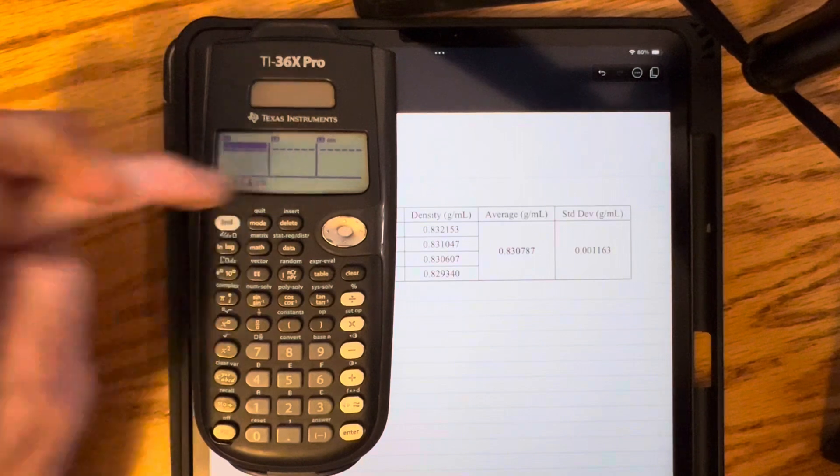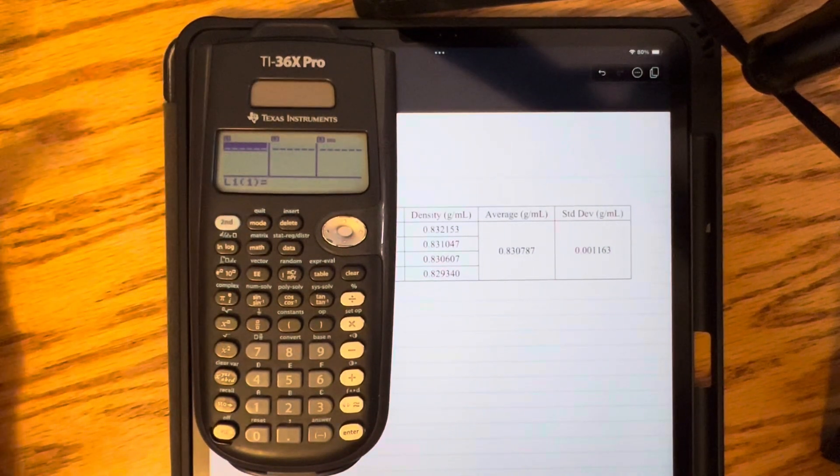This gives us a miniature spreadsheet. If there are values in here, you want to delete them all before you enter your data.